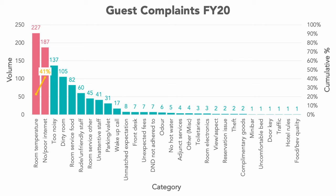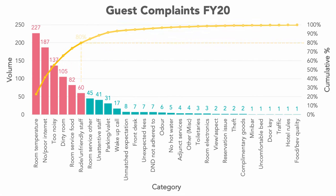Together, those two categories make up 41% of our total complaints. Noise brings us up to 55%, Dirty Rooms to 66%, Room Service Food to 74%, and Rude/Unfriendly Staff brings us up to 80%. Now we're at 80% — let's keep this in view — but we keep going until we've completed all the cumulative percentages.